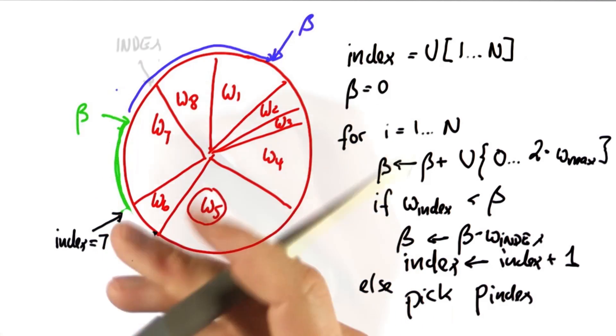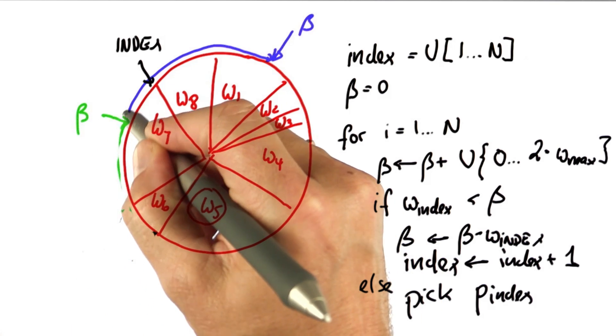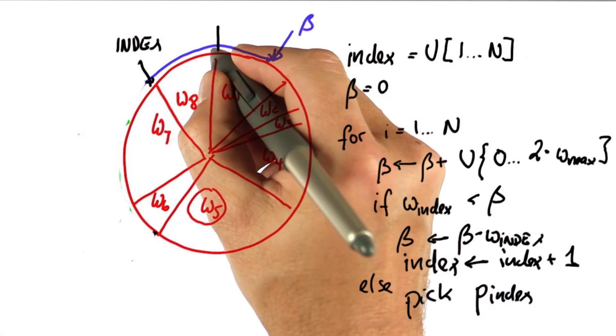Now we make index flop up, reducing beta by all the slice over here, which is W7. It'll then jump over here...